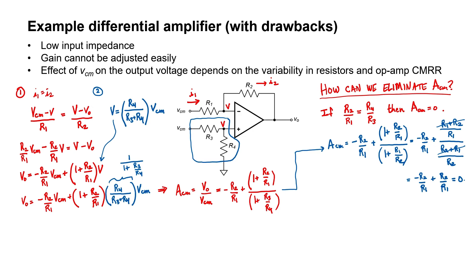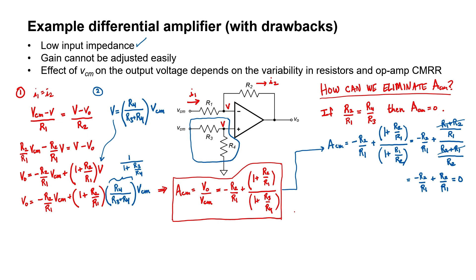One drawback is low input impedance. The third drawback is that the effect of common mode voltage on the output depends on resistor variability and the op amp's common mode rejection ratio. The common mode gain depends on all of the resistors. Even if I set R2/R1 equal to R4/R3, the resistors may not be perfectly matched in practice. If R2 equals R4 and R1 equals R3, the common mode gain is zero — but resistors pulled from the rack can vary by about 1%, meaning the common mode gain might not be exactly zero. It also depends on the op amp's own common mode rejection ratio.